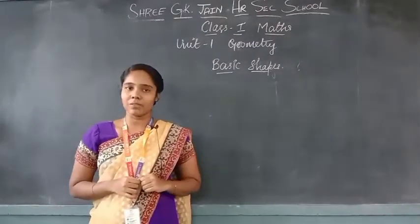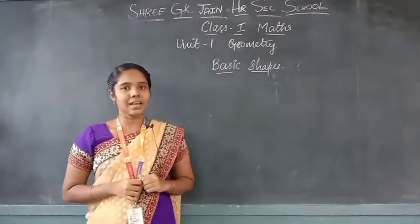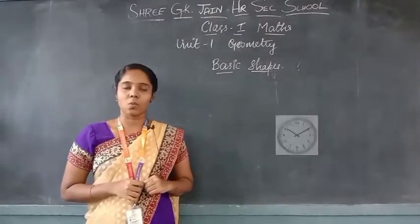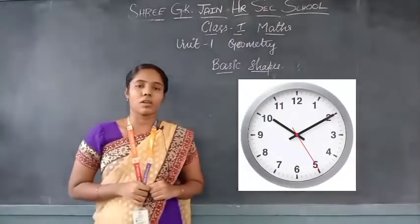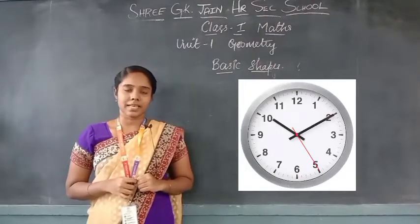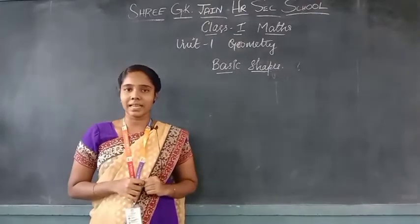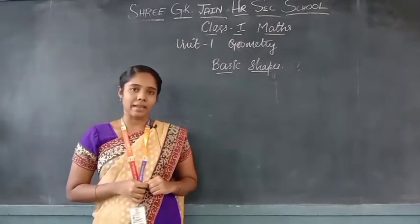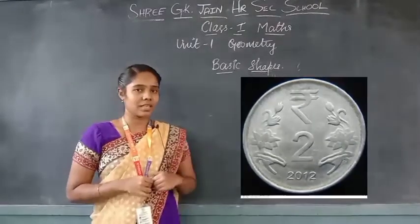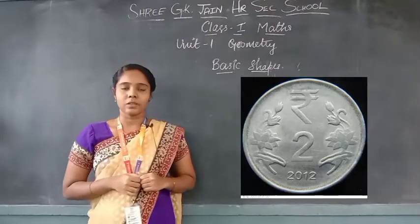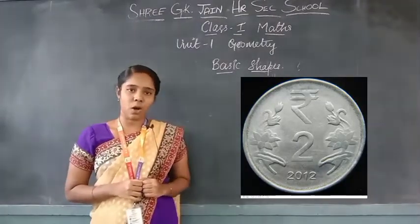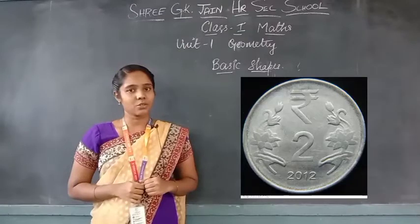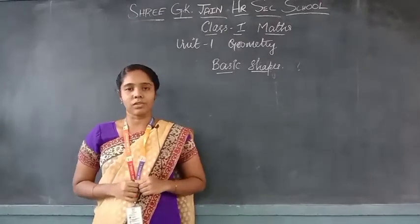What is the one more shape for which you have to see an example? It is circle. What is the example for circle? A wall clock is an example for circle — wall clock helps us to see the time. Another example: a CD is also an example for circle. One more example — a coin. We use coins to buy things from the shop. The shape of a coin is also a circle.